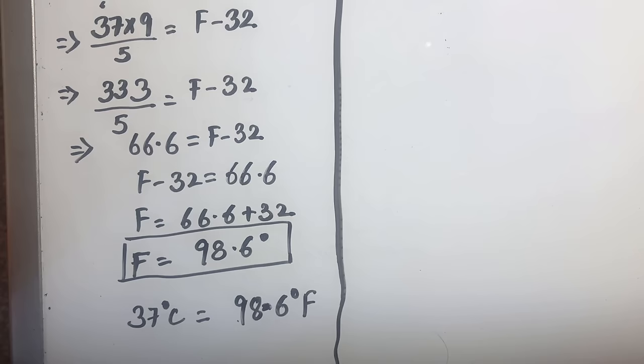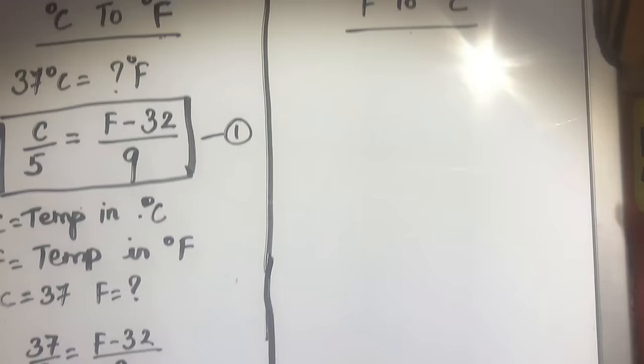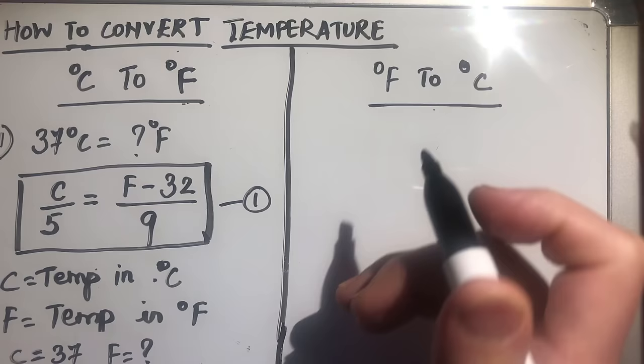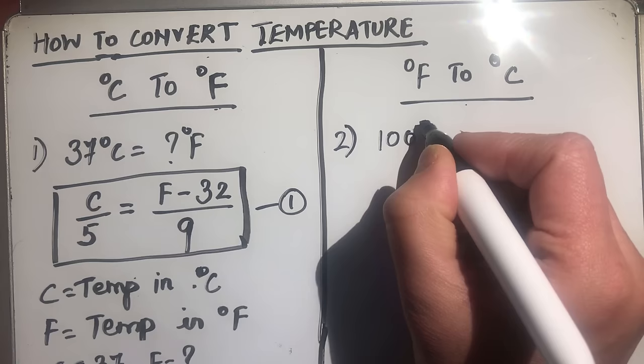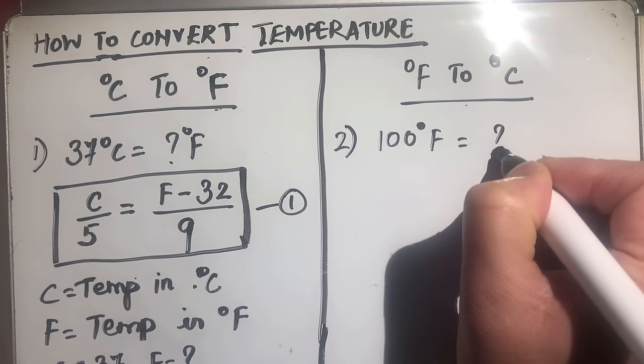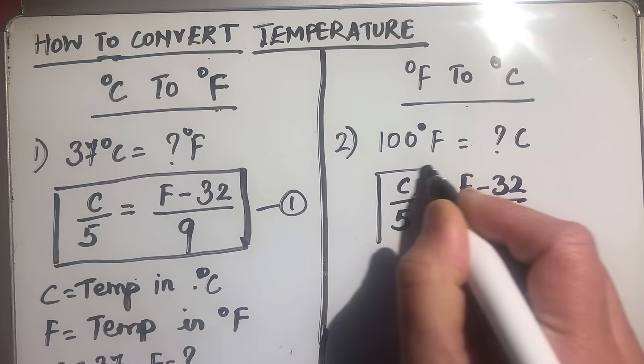Now let's get started with the second one: how to convert degree Fahrenheit to degree centigrade. Let's take the quantity 100 degrees Fahrenheit and check what that is in centigrade. Our basic relation is C over 5 equals F minus 32 over 9 — we are going to use the same formula. Here C is unknown and F is 100 degrees.